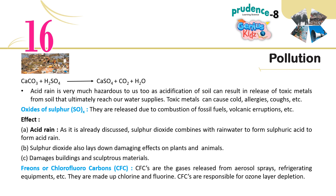Oxides of sulfur (SOx) are released due to combustion of fossil fuels, volcanic eruptions, etc. Effects: A. Acid rain — sulfur dioxide combines with rainwater to form sulfuric acid, forming acid rain. B. Sulfur dioxide also lays down damaging effects on plants and animals. C. It damages buildings and sculptural materials. Freons or chlorofluorocarbons (CFCs) are gases released from aerosol sprays, refrigerating equipment, etc. They are made up of chlorine and fluorine, and CFCs are responsible for ozone layer depletion.